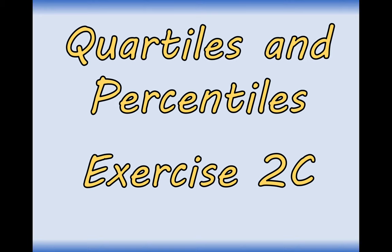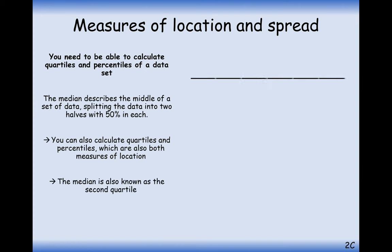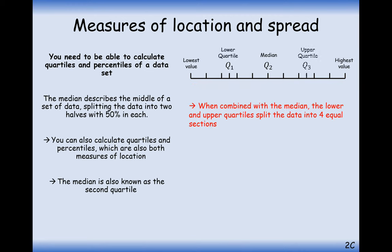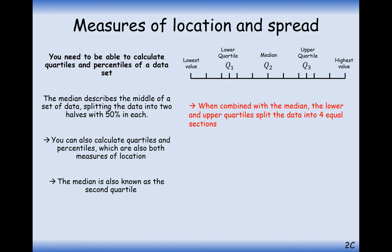Percentiles might be new to you but they're exactly the same thing as quartiles really. To work out the median for a set of data, we order our data points from smallest to largest, and then the halfway point is your median. Your quarter-way point is Q1, the lower quartile, and the three-quarter-way point is the upper quartile. In between each of these — lower quartile, median, and upper quartile — contains 25% of the data. Percentiles work in roughly the same way, so the 10th percentile, for example, will have 10% of the data below that marker.